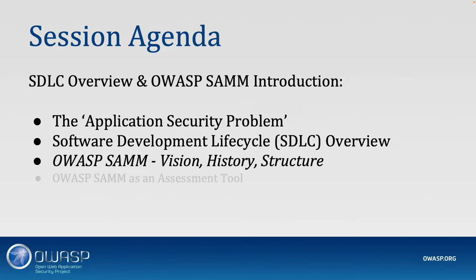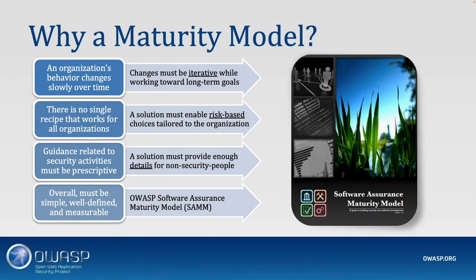OWASP SAMM is an AppSec program. It helps you measure your current security posture, plan how you want to improve, follow that plan, and demonstrate improvements. There are four key characteristics of the model. The first is that you cannot boil the ocean at once — you cannot go from zero to hero in security. If you look at the full SAMM model and you don't do anything about security, you're going to get scared and close it.